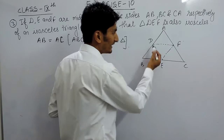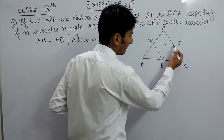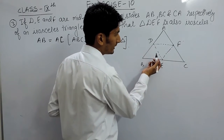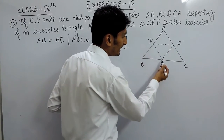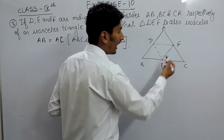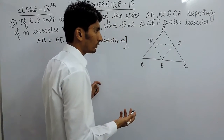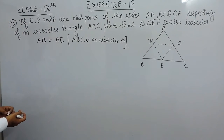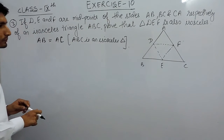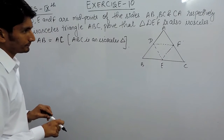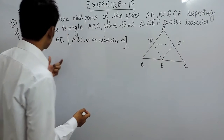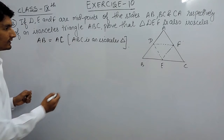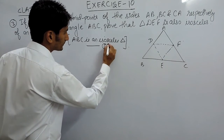To prove that DEF is an isosceles triangle, what we have to prove is that any two sides of this triangle are also equal. And for that we have to use the midpoint theorem. First of all we know that AB equals AC — this is our first equation.